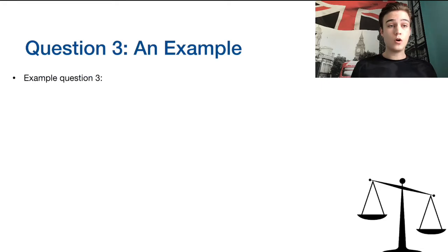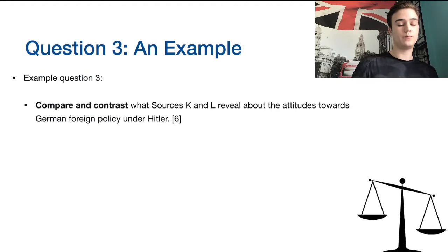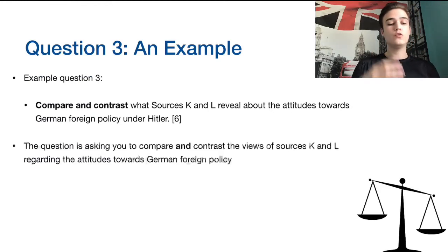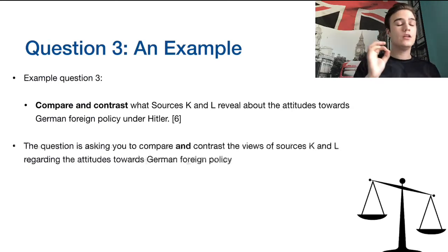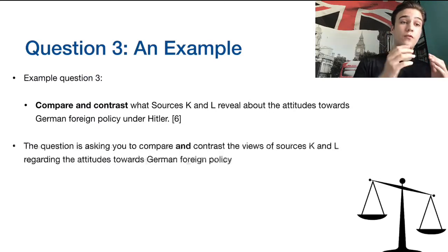We're going to use example question three from the 'Move to Global War' prescribed subject using the May 2019 paper. The question states: 'Compare and contrast what sources K and L reveal about the attitudes towards German foreign policy under Hitler.' The question is asking you to compare and contrast how sources K and L view the attitudes — the way people reacted to German foreign policy. You're comparing and contrasting what people felt about German foreign policy, how they reacted, what their attitudes were. That's the key theme.